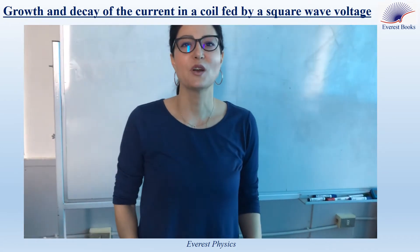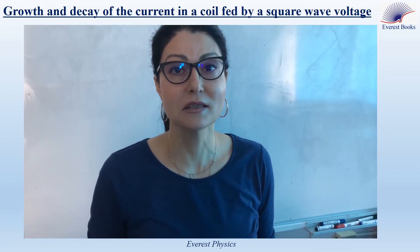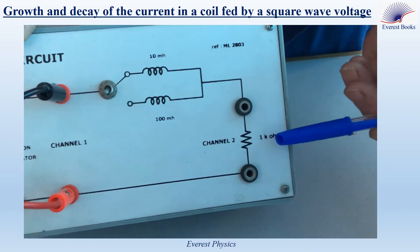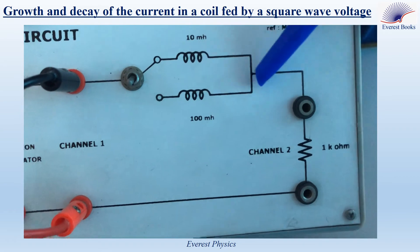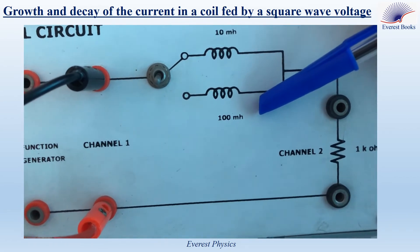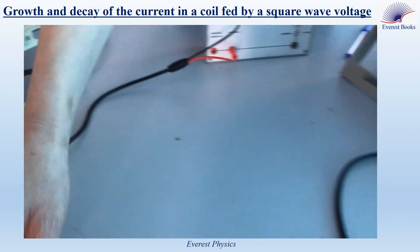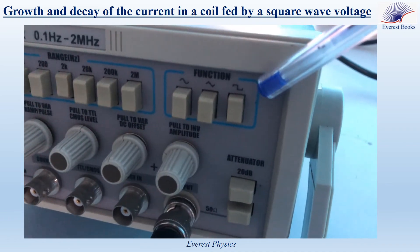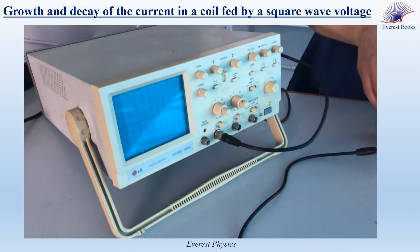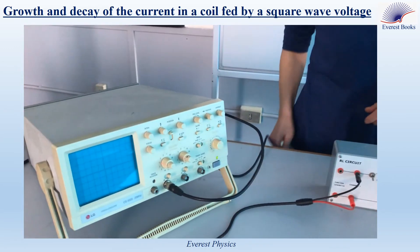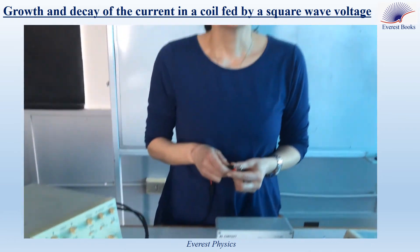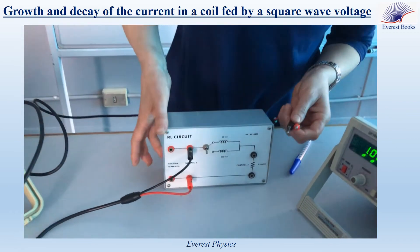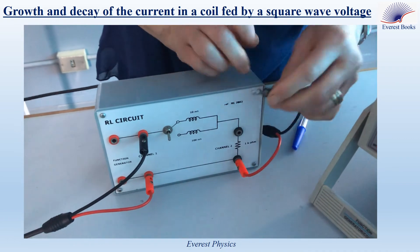In this experiment, we want to observe the growth and the decay of the current in an R-L series circuit fed by a square wave voltage. We have a resistor of resistance 1 kilo-ohm connected in series with a coil whose inductance is 100 millihenry. The resistor and the coil are connected in series with the function generator, adjusted to provide a square wave voltage. We will connect the oscilloscope across the resistor, since the curve of the current is similar to that of the voltage across the resistor, differing only by a constant multiplying factor.